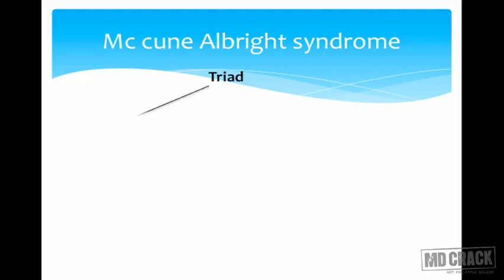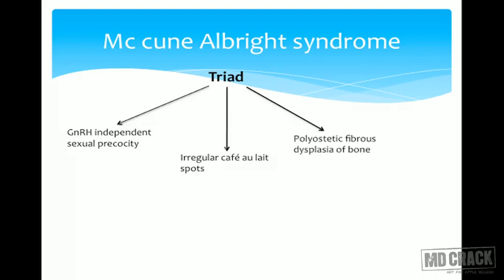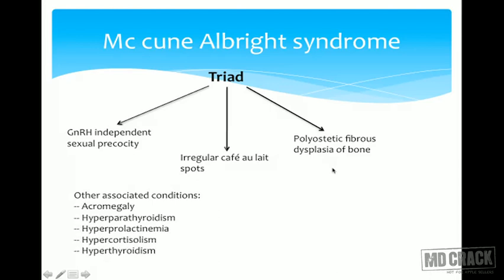McCune-Albright syndrome is a triad: GnRH-independent isosexual precocity (peripheral), irregular café-au-lait spots, and polyostotic fibrous dysplasia of bone. Associated conditions include acromegaly, hyperparathyroidism, hyperprolactinemia, hypercortisolism, and hyperthyroidism. Since it is GnRH-independent, GnRH analogues are of no value; tamoxifen is used instead.